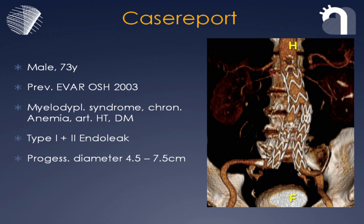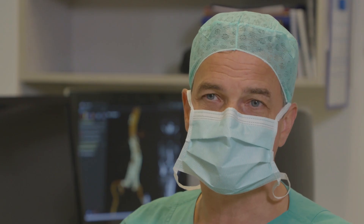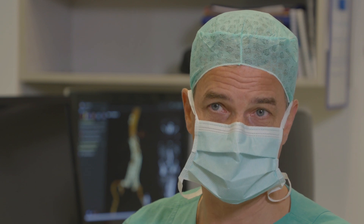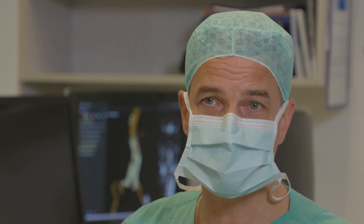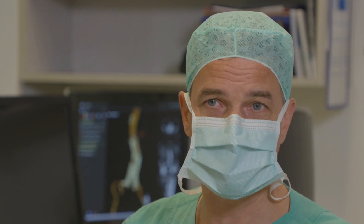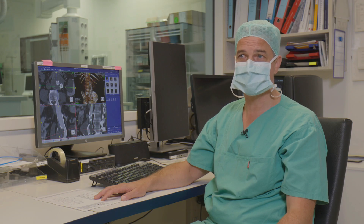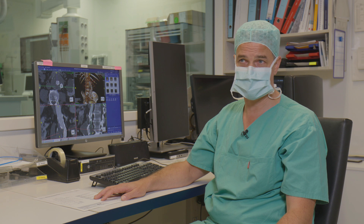This is a 73-year-old patient who has been treated in 2003 with an infrarenal EVAR for, at that time, a relatively small aneurysm of 4.5 cm. This aneurysm has now grown to a diameter of 7.6 cm. It had been picked up incidentally as the patient received a CT angiography during his treatment for myelodysplastic syndrome.